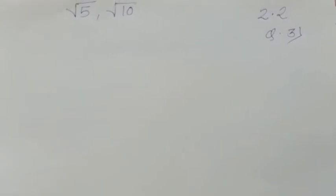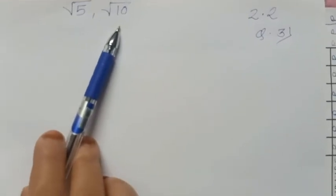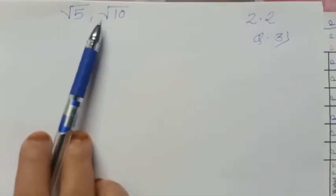Assalamualaikum warahmatullahi wabarakatuh. Dear students, one question from the 2.2 practice set is remaining. In that 2.2 practice set, question number 3 is: represent rational numbers root 5 and root 10 on a number line. So let's see how to represent root 5 and root 10 on a number line.